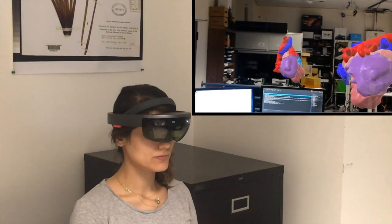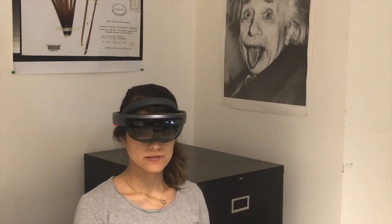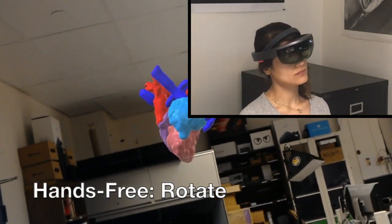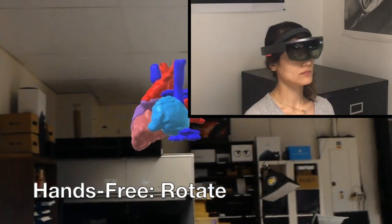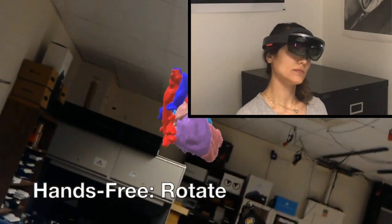Our translation transformations are implemented using 0th order control. As the user moves their hand or head, the model will move around accordingly. Using our hands-free rotation transformation, as the user rotates their head away from a center window fixed relative to the model, the model will begin to rotate towards the direction the user is now facing.